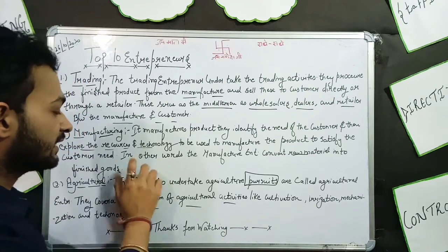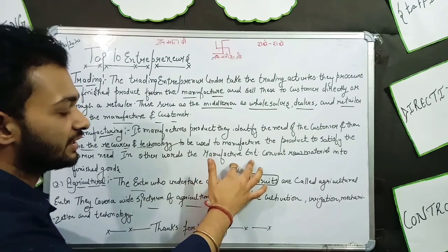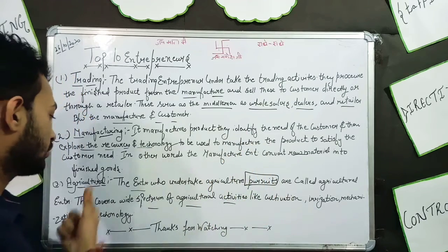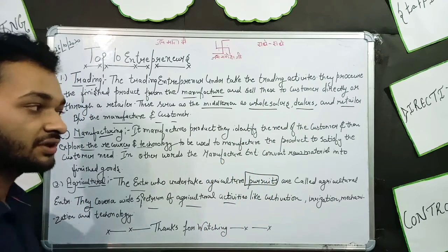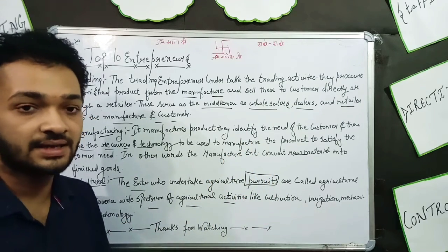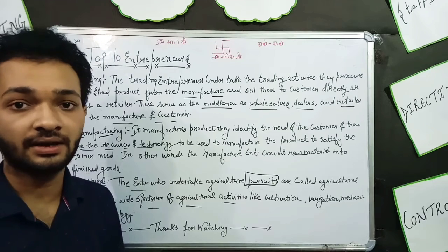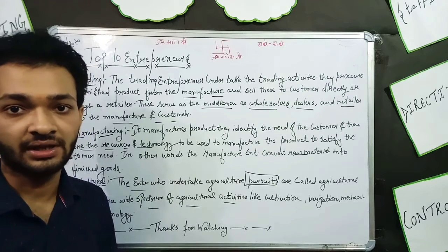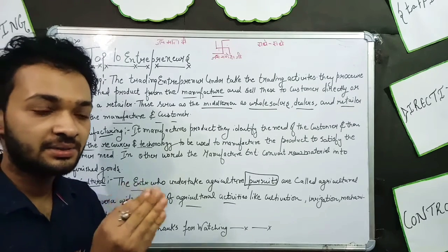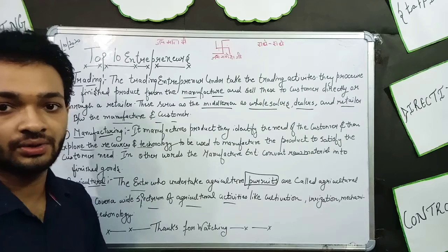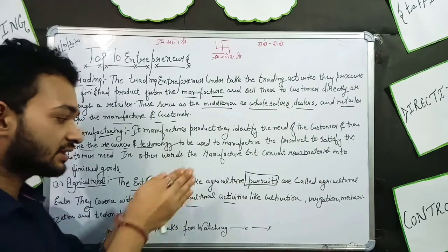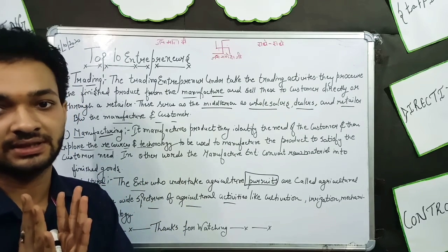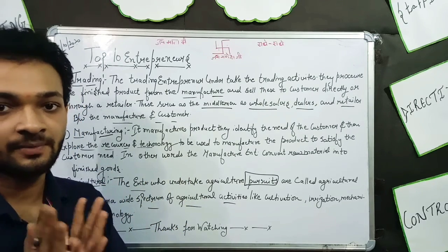In other words, the manufacturing entrepreneur converts the raw material into finished goods. They analyze everything first, and then they manufacture and convert raw materials into finished goods.